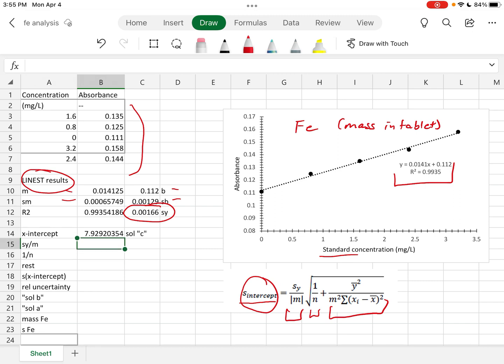We first need to calculate sy over m. sy is the value that we got from LINEST and m is the slope. So here we are.